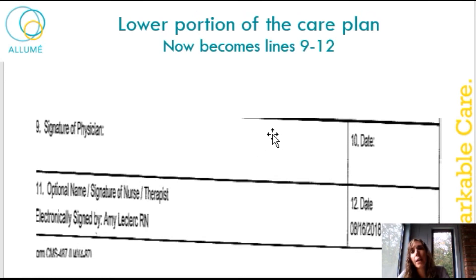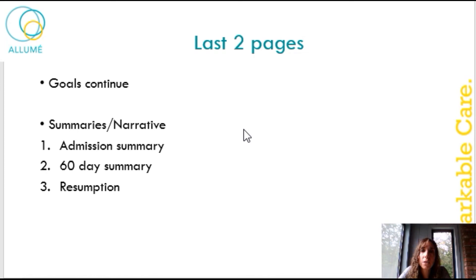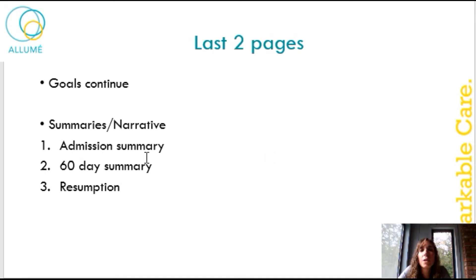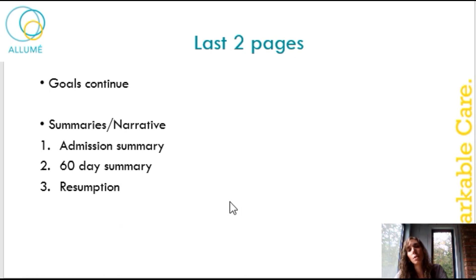Here's the lower portion of the care plan — it now becomes 9 through 12. You'll see the signature of the physician, the date it was signed, and then the nurse that wrote the care plan and the date that she or he wrote it. On the last two pages, the goals will continue and you will find a really nice summary and narrative that tells you all about your patient. The summaries are usually either an admission summary, a 60-day summary — which is the recertification for the patient so we can continue giving them care — or a resumption in case they were in the hospital and we needed to tell the story about why they were there and all the changes in the orders.